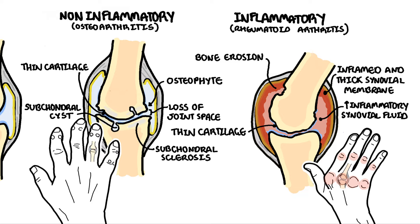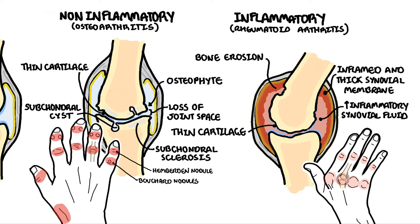Typical features that differentiate osteoarthritis from rheumatoid arthritis: osteoarthritis pain typically involves any joint, but particularly the distal interphalangeal joint, proximal interphalangeal joint, and first carpometacarpal joints, although it can occur anywhere with overuse. Bone growth can occur at specific sites — at the distal interphalangeal joints, these are called Heberden's nodes, and at the proximal interphalangeal joints, called Bouchard's nodes.